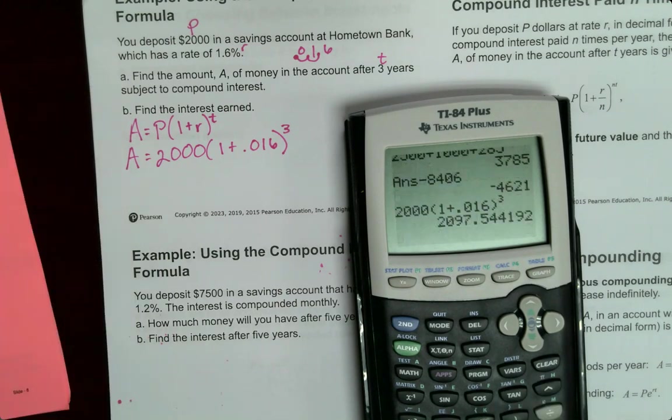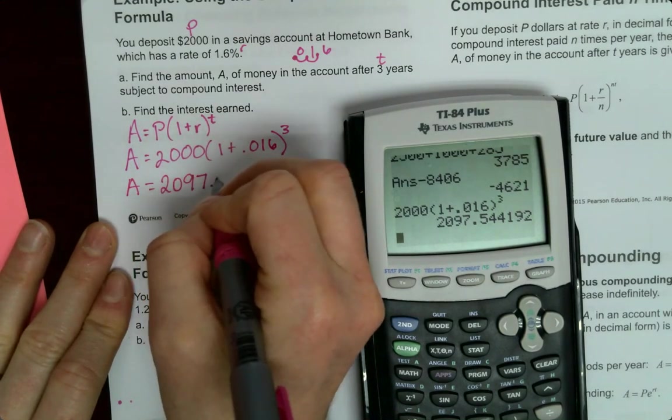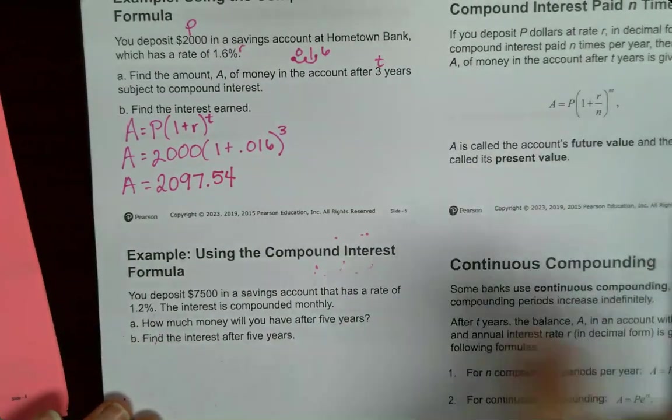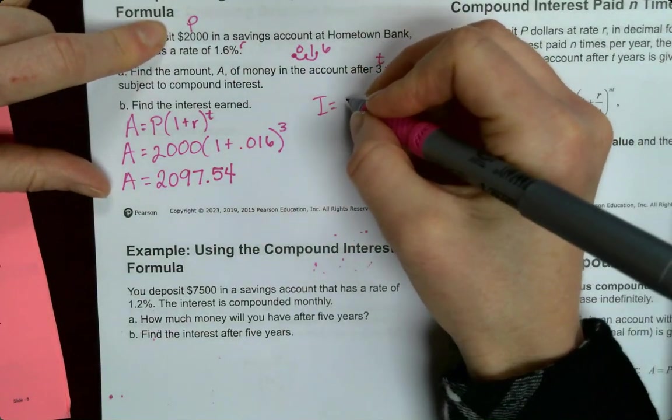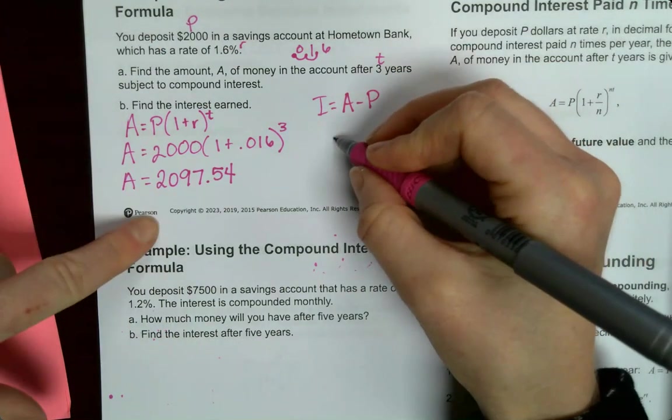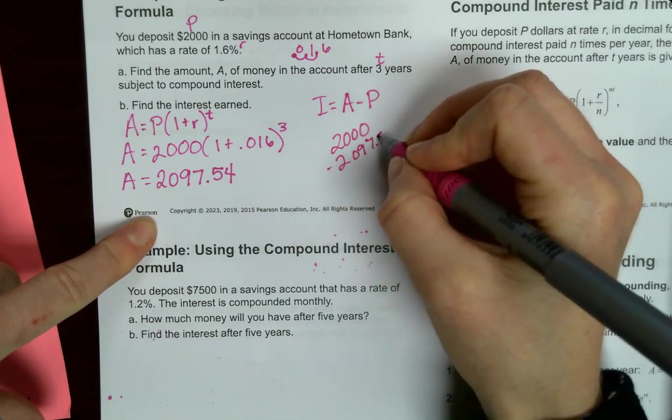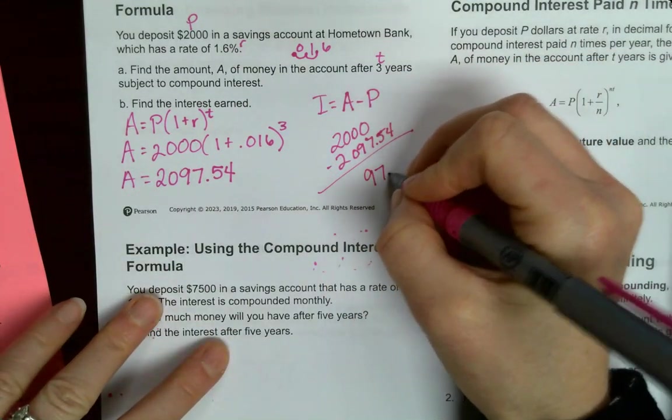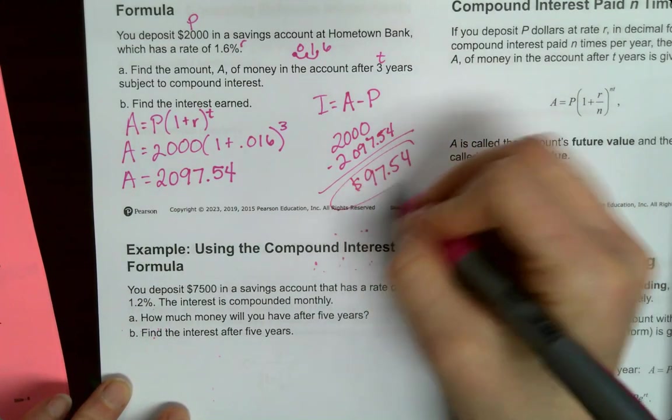Okay, so that is the amount of 2,097.54. We want interest earned for part B, so what we can do is we can find the interest by taking the amount in the account minus what we put in originally. So 2,097.54 minus 2,000 is 97.54 in interest.